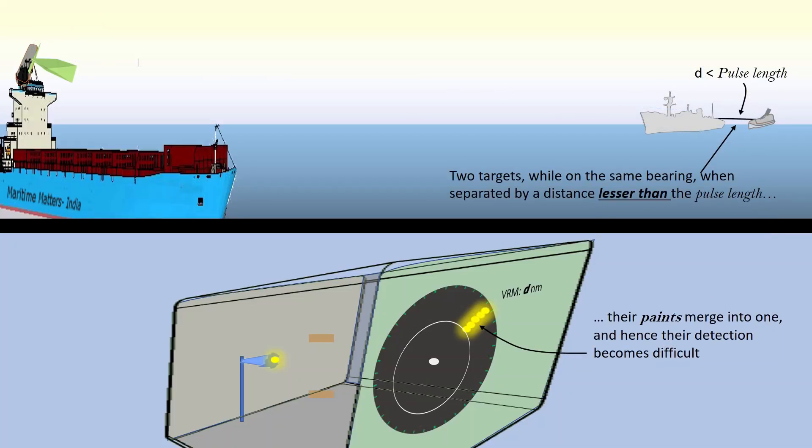Two targets, while on the same bearing, when separated by a distance lesser than the pulse length, their paints merge into one and hence their detection becomes difficult.